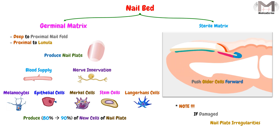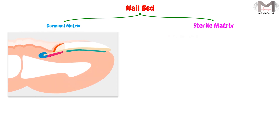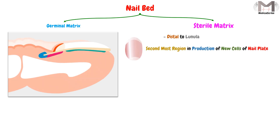The sterile matrix is the second region in the nail bed. This region is exactly distal to the lunula, and it is considered the second most important region in the production of new cells of the nail plate, after the germinal matrix. It also attaches strongly with the nail plate.